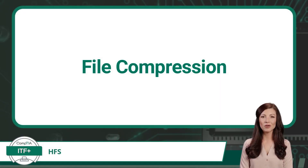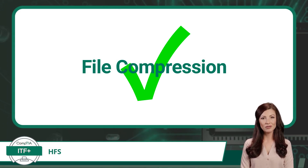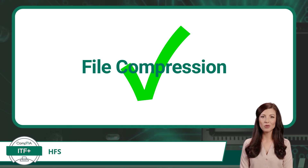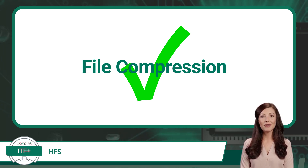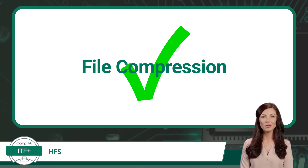Our first feature is File Compression. HFS Plus, an extension of the original HFS, introduced file compression capabilities that were not available in the original HFS. With HFS Plus, users have the option to compress individual files or directories, reducing their size on disk and saving storage space. This enhancement addresses a limitation of the original HFS, which lacked built-in support for file compression, making HFS Plus a more versatile file system for Mac users.